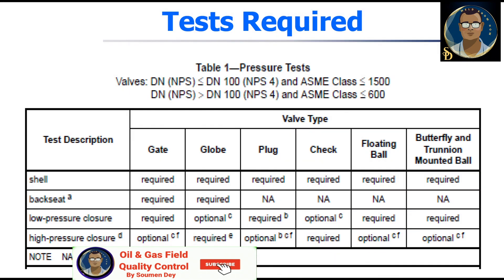As per API 598, you can see in Table 1 where the pressure test required or not required is clearly mentioned. For valve diameters less than 4 inch with ASME class less than 1500, and diameter DN more than 4 inch with ASME class less than or equal to 600, this table is applicable. You can see the back seat test is not required for plug valve, check valve, floating ball, and butterfly trunnion-mounted ball valves.